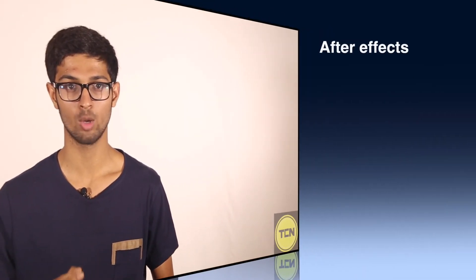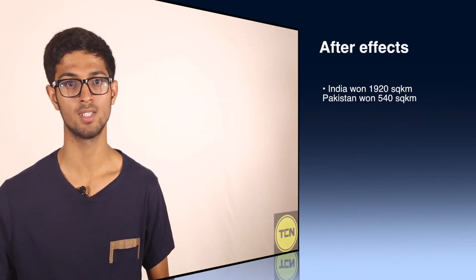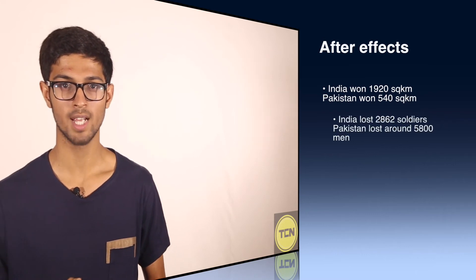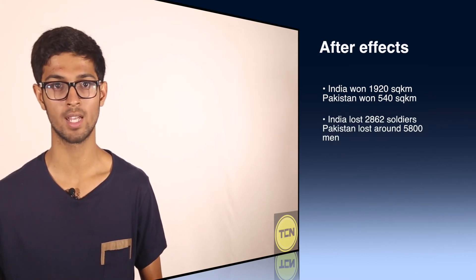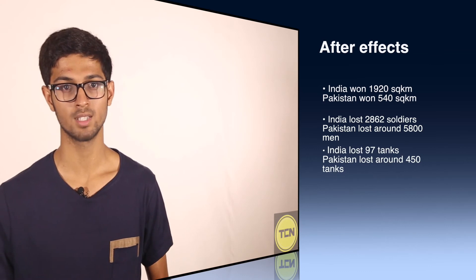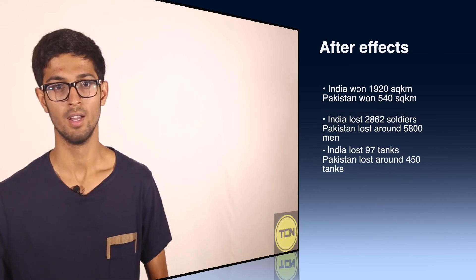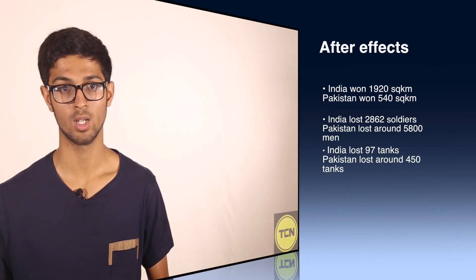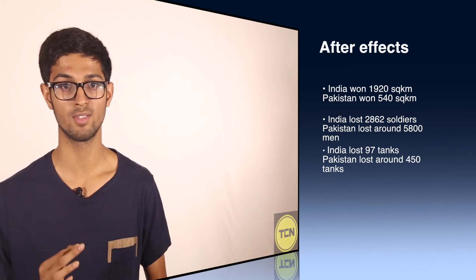The war ended with a UN-brokered ceasefire. According to an article by BBC News, India won 1920 square kilometers while Pakistan won 540 square kilometers. 2862 Indian soldiers were killed in action while Pakistan lost around 5800. India lost 97 tanks while Pakistan lost around 450 tanks.